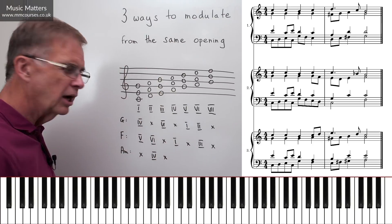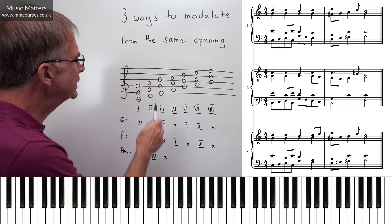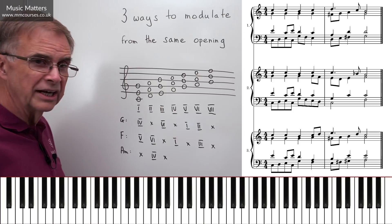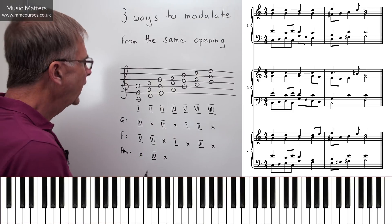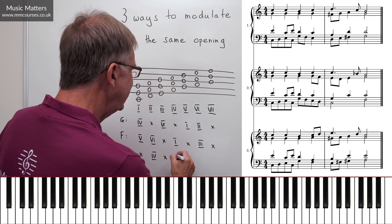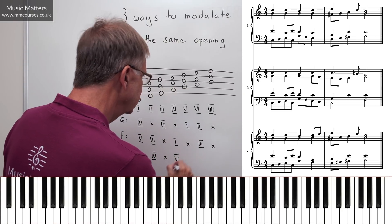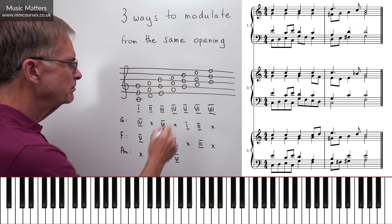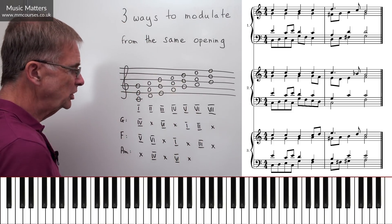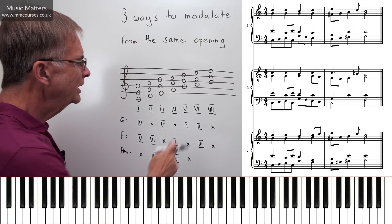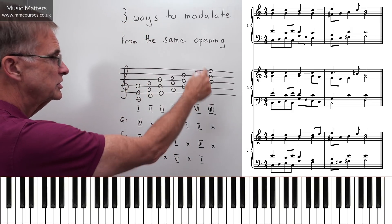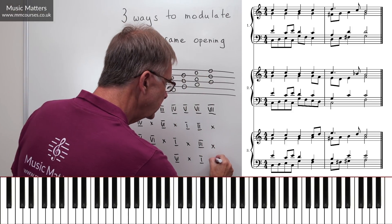Chord III in C has a G natural — not much use for harmonic minor A minor. Chord IV in C is chord VI in A minor — quite useful. Chord V in C has the G natural — not really useful. Chord VI in C is chord I in A minor — quite useful. And chord VII in C is chord II in A minor.